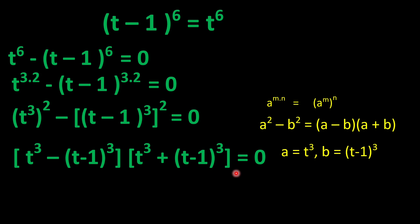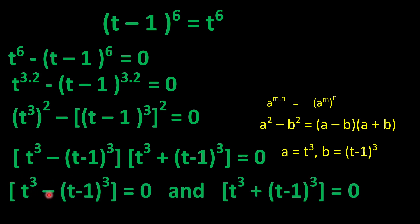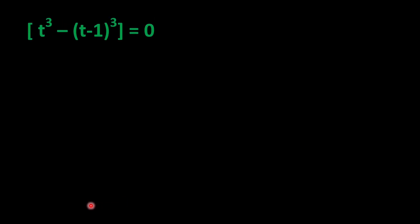We compare each factor with zero, giving us two separate equations: t^3 - (t-1)^3 = 0 and t^3 + (t-1)^3 = 0. We will solve these two equations separately for the value of t.